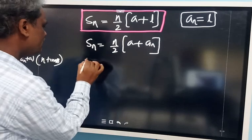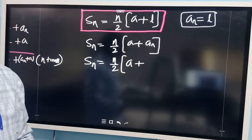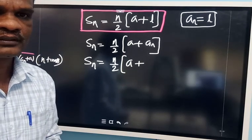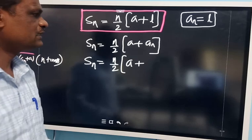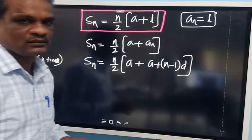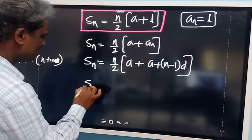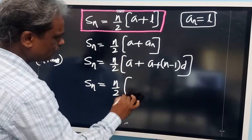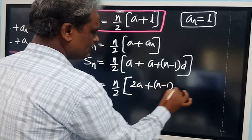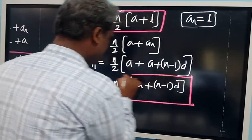Now, if we substitute AN using the nth term formula — AN equals A plus (N minus 1) into D — into SN equals N by 2 into (A plus AN), we get SN equals N by 2 into (A plus A plus (N minus 1) into D), which simplifies to SN equals N by 2 into (2A plus (N minus 1) into D).